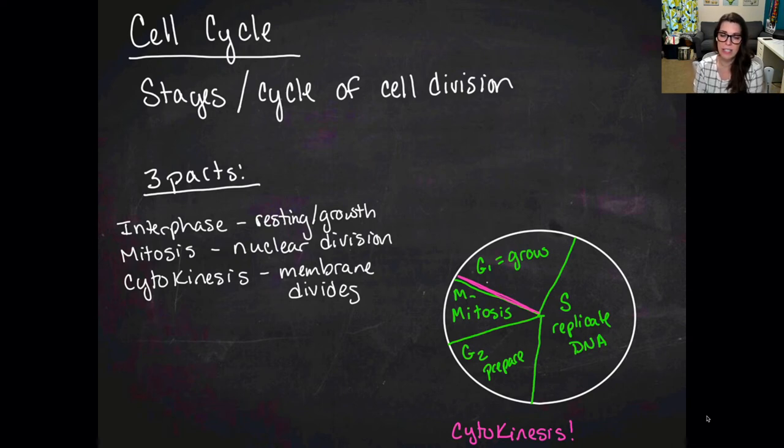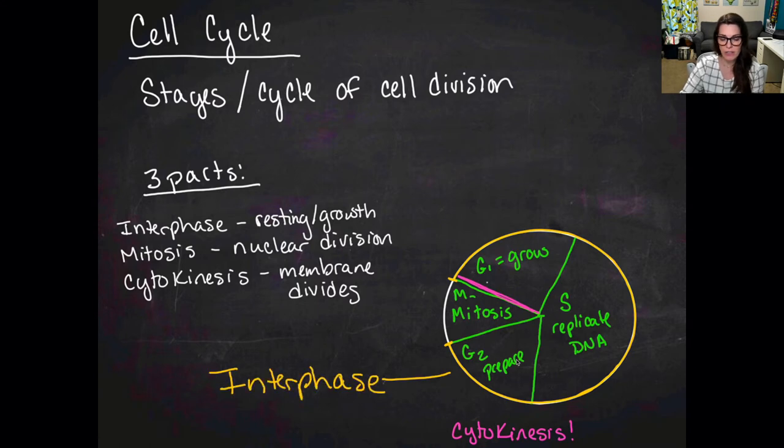And then the last part of interphase is G2, which is basically prepare to divide. It is when the cell does a check to make sure that it has all the proteins and everything that it needs to divide. So we're going to look at those phases together. G1, S, and G2 together make up interphase.